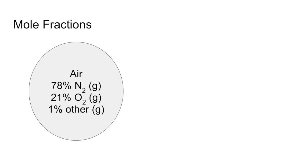Before we move on to the calculations, we need to know about mole fractions and partial pressures. So we'll start with mole fractions, and I'm going to use air to illustrate this. So air is a composition of gases - 78% nitrogen, 21% oxygen, 1% other.